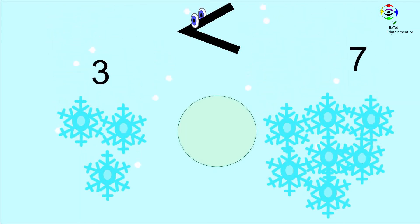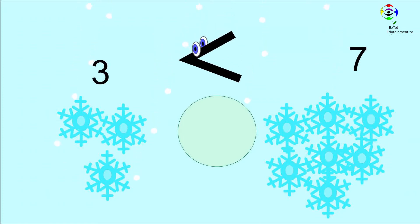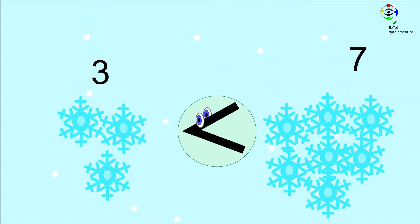Here we have three snowflakes and seven snowflakes. Three is less than seven. Look at where Mr. Sign is facing. You can see Mr. Sign is facing the bigger number.